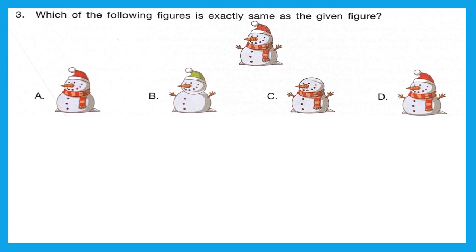Question 3: which of the following figures is exactly the same as the given figure? We have to find which is an exact copy of the given snowman. In option A, the snowman is missing the hands. In option B, a lot of things are missing and the color of the cap is also different. In option C, the cap is missing. Option D looks exactly the same, so our answer is option D.